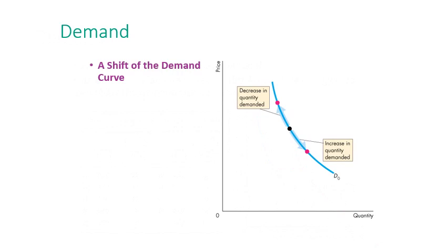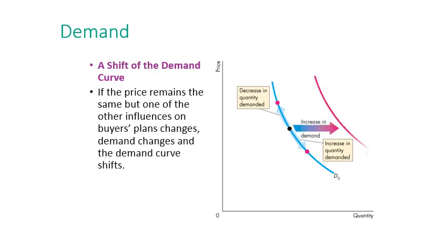In this graph we can see the difference between an increase and decrease in quantity demanded — which is caused by a change in price and is represented as a movement along the curve — and an increase or decrease in demand itself, which is a shift of the whole demand curve. This shift results from the six factors we mentioned. You should differentiate between movement along the curve and a shift of the demand curve.